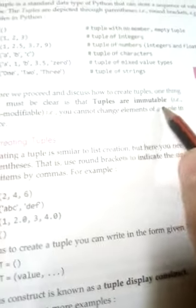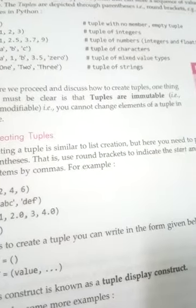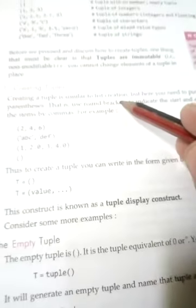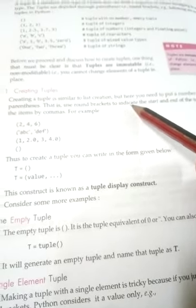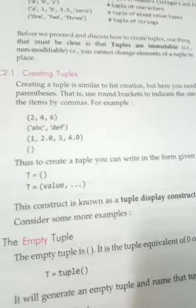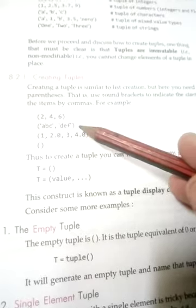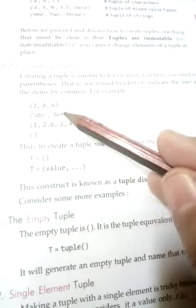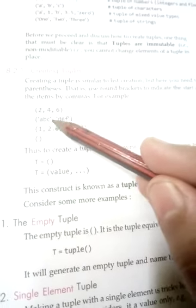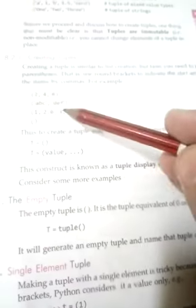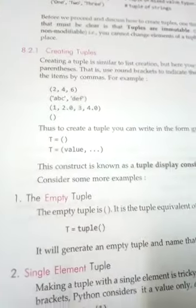The most important thing is that tuples are immutable — we cannot change the value of tuples in their positions. Creating a tuple is similar to list creation, but you put expressions in parentheses — round brackets — to indicate the start and end of the tuple, and separate values with commas. For example: (2, 4, 6) or ('ABC', 'DEF') where the quoted values are strings.